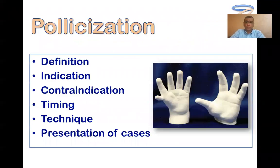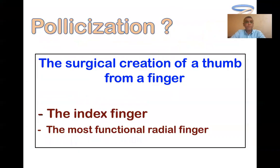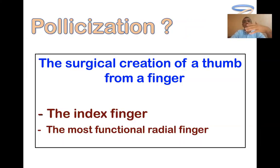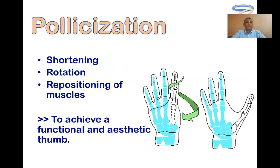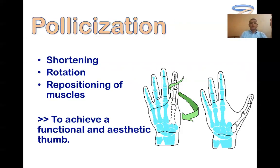What is the meaning of pollicization? The definition, indications, contraindications, timing, technique, and some case presentations. Pollicization is the creation of a thumb from a finger — we take a finger and transform it into a thumb. Usually this finger is the index finger, but sometimes it's the most radial finger, for example in cases of polydactyly with absence of the thumb. Pollicization means shortening of the index finger, rotating it to be similar to the thumb, and repositioning the muscles to have opponents and adductor of the thumb, aiming to achieve a functional and aesthetic thumb.